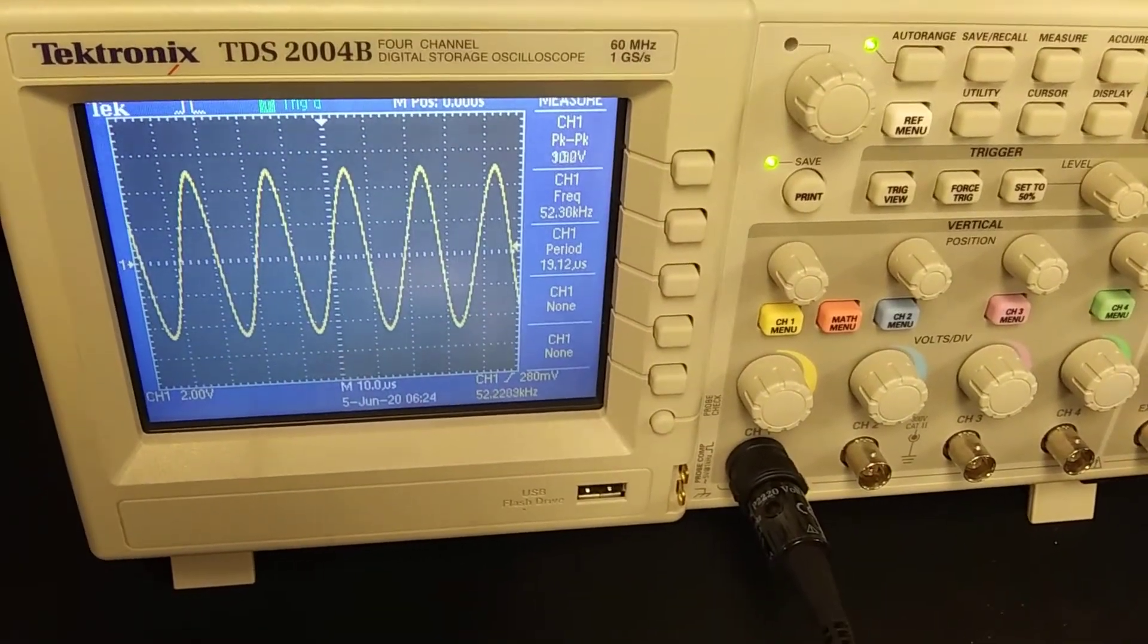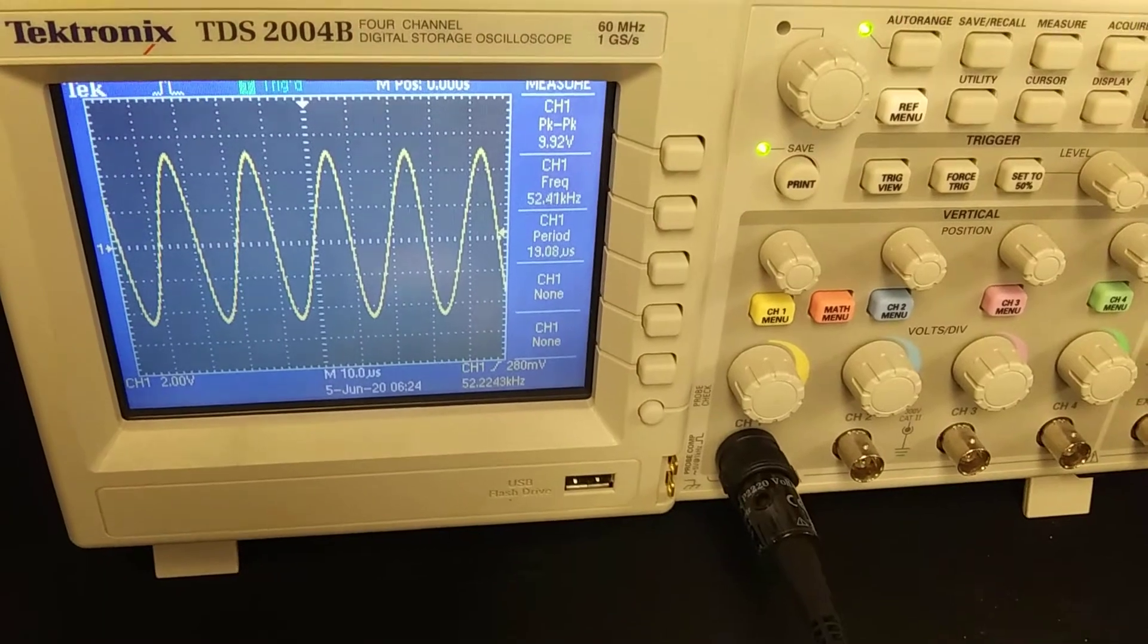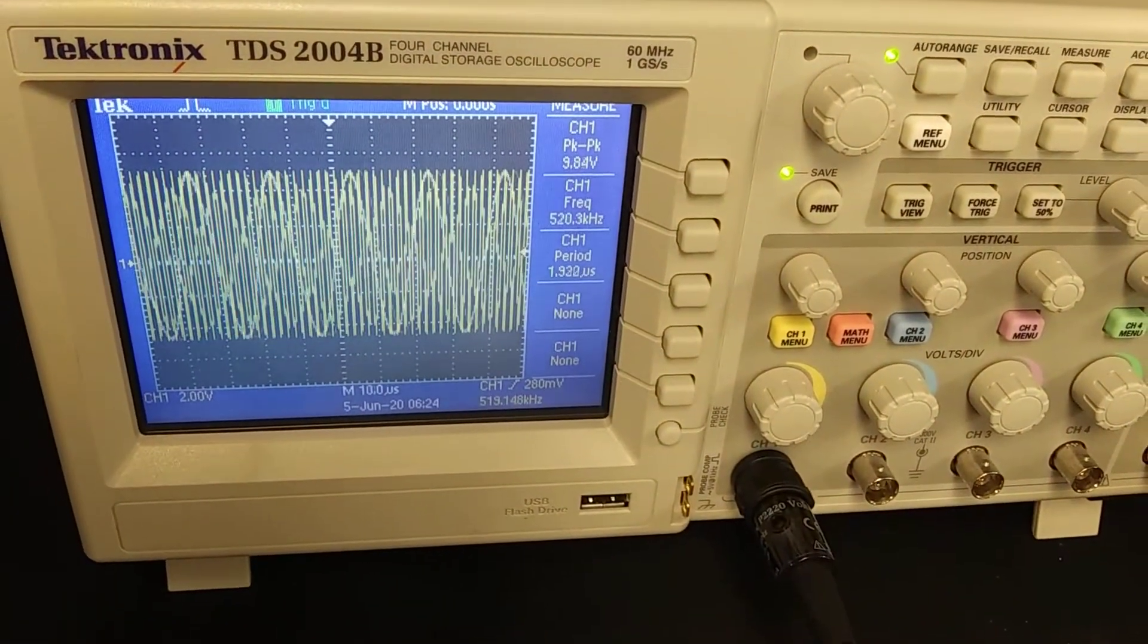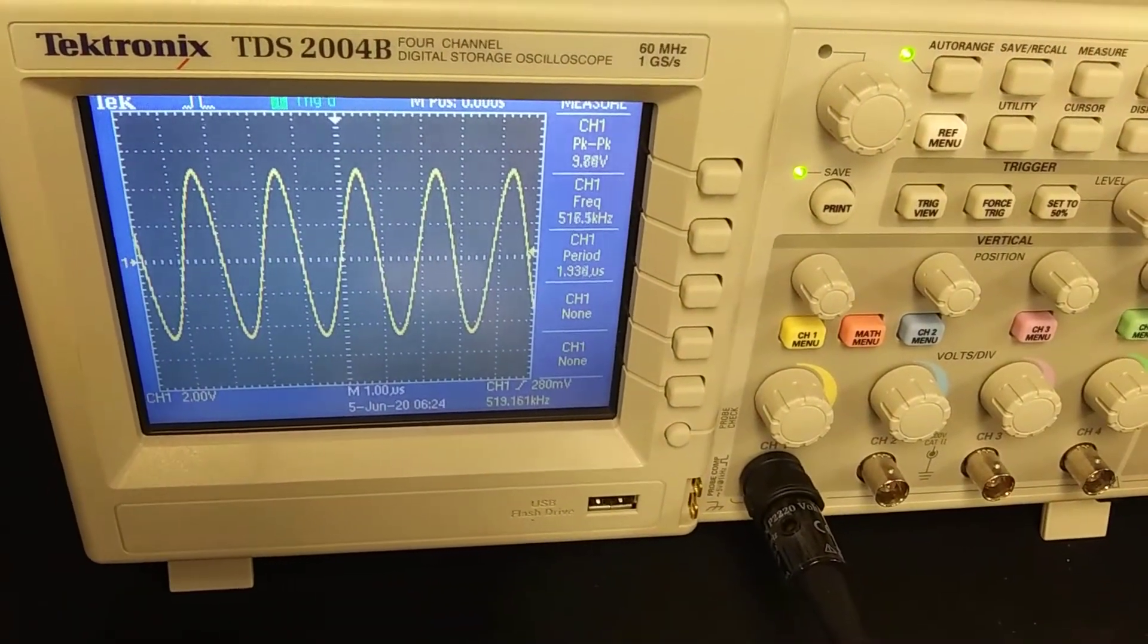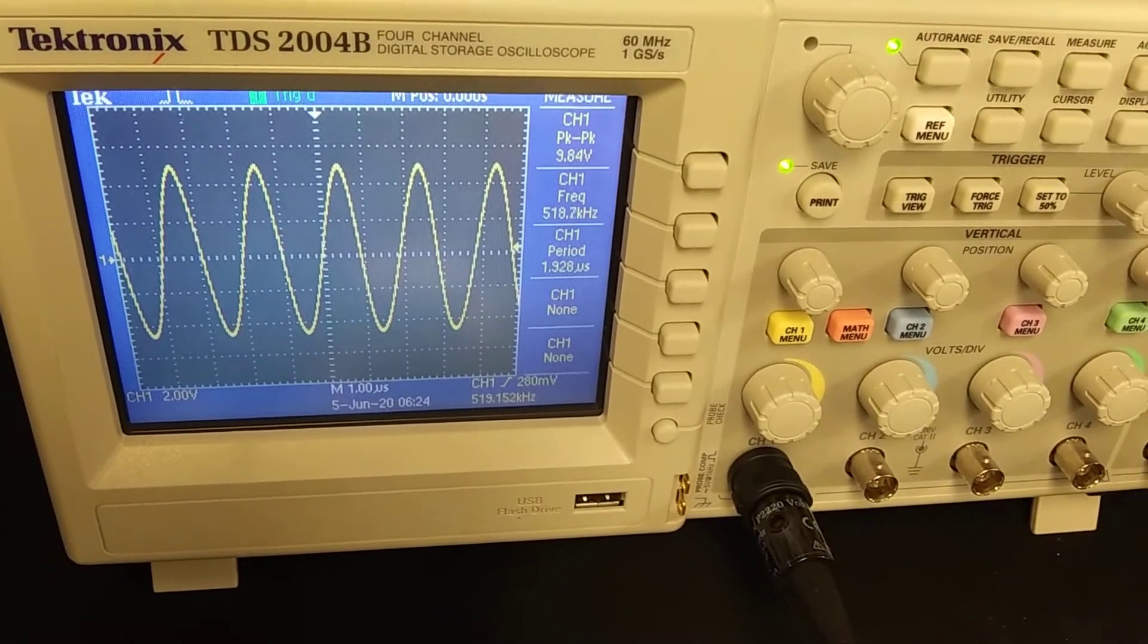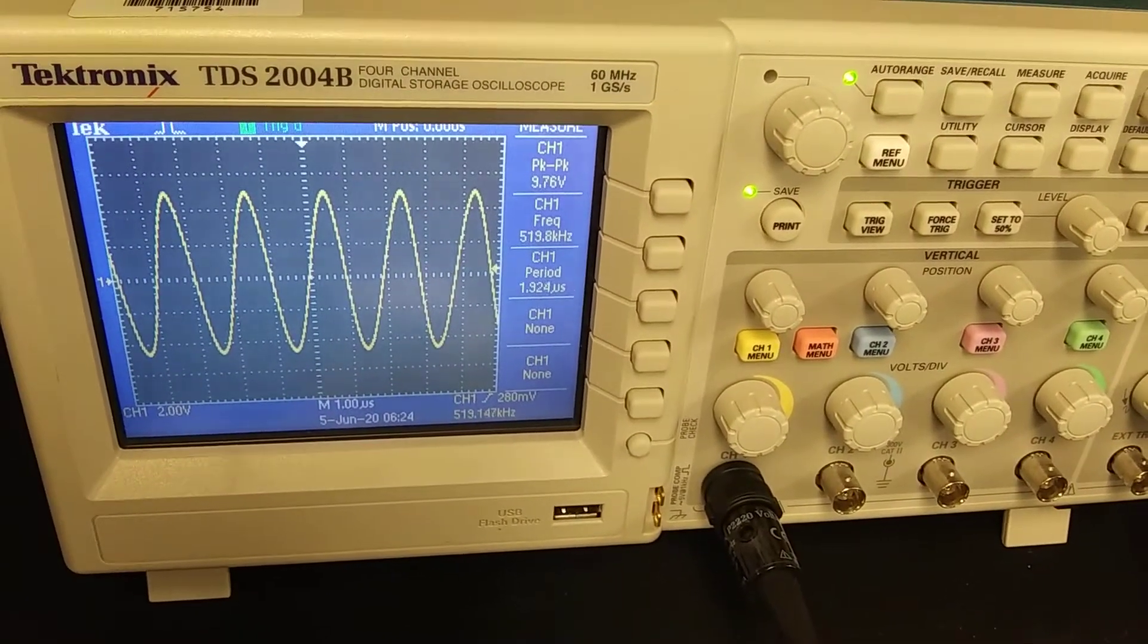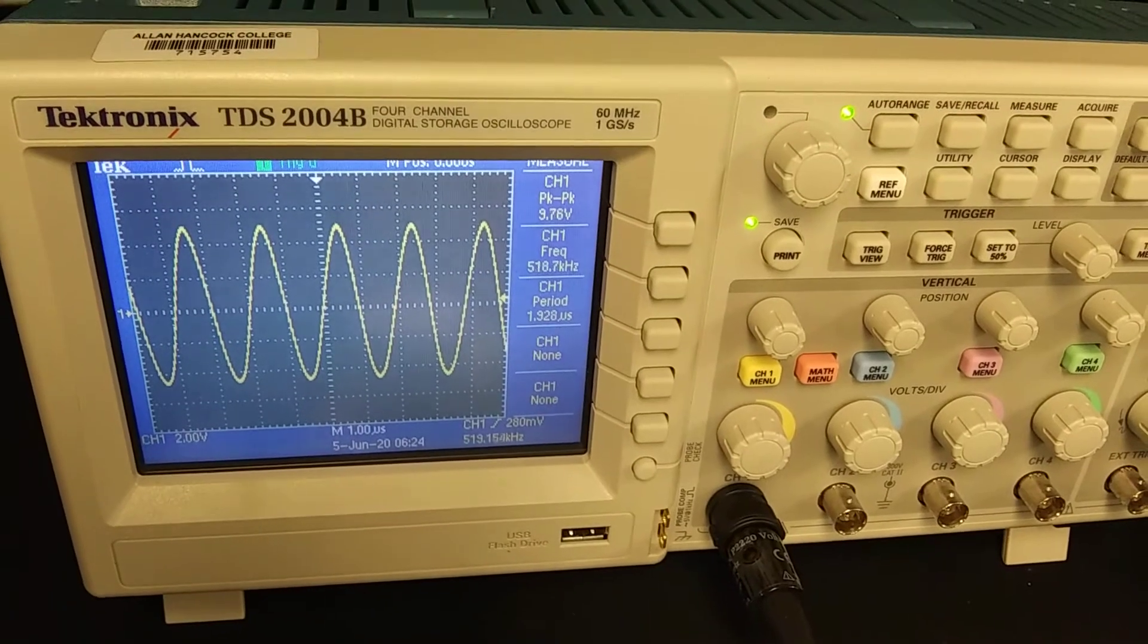At 50,000 Hz you get about 9.9 and then it looks like it sticks around in that 9.8, 9.9 once we're up to 500 kHz. So 500,000 Hz.